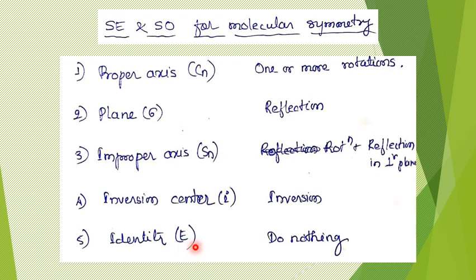Lastly, identity is indicated by E. The operation for identity is simply doing nothing — nothing is done on the molecule. Alternatively, a 360-degree rotation of any molecule is as good as doing nothing, so a 360-degree rotation can also be taken as the symmetry operation for identity. These are the different kinds of symmetry elements.